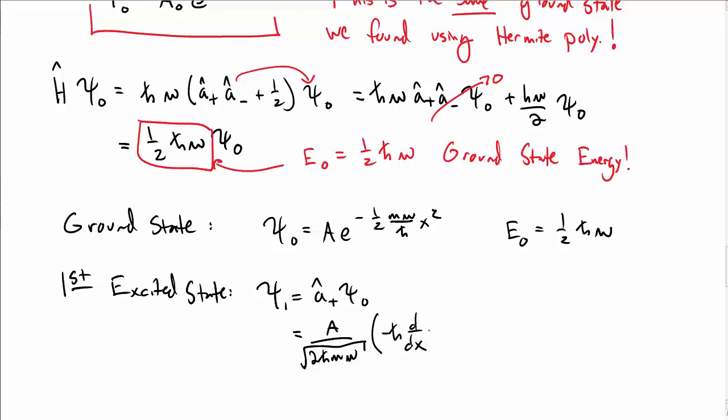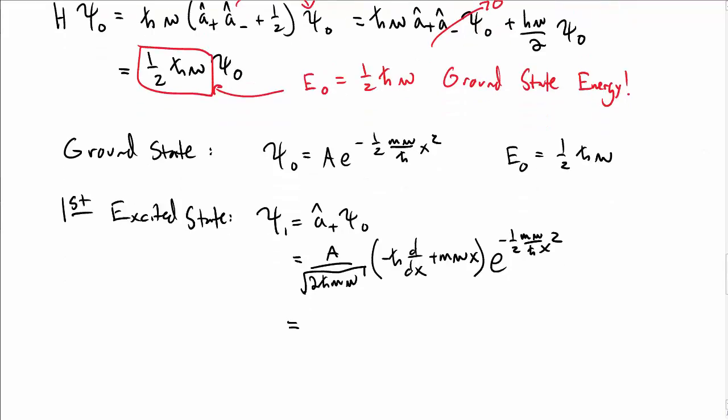And then recall that A⁺ is -ℏ d/dx + mωx. And that is going to operate on the e^(-1/2 mω/ℏ x²).